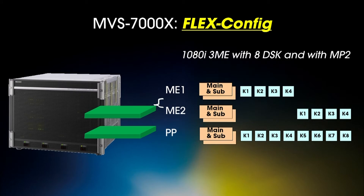This next configuration is actually pretty popular in the marketplace. I've got two ME boards in the system, not three, so I've saved a little bit of money on the configuration cost. I don't have to split the boards evenly — the first board is split so that it has ME1 and 2 with four keyers each and main and sub. But Program Preset is still a full board with eight keyers and main and sub. This allows for things like many downstream keyers — maybe in a news organization that has a lot of bugs or graphics to bring in or out individually.